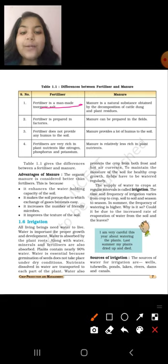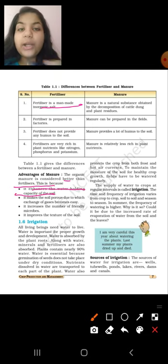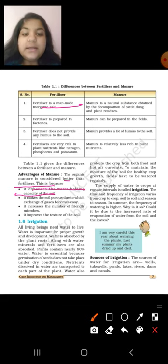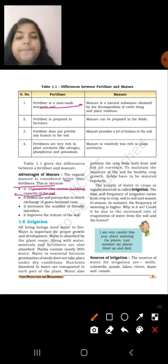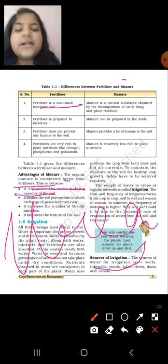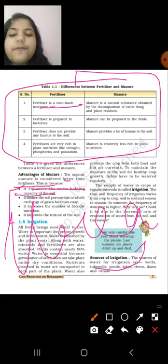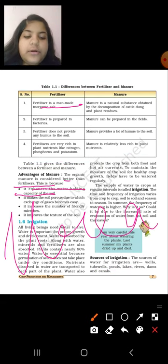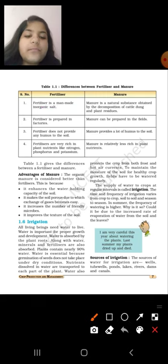Advantages of manure. Now we are going to read about the advantages of manure. The organic manure is considered better than fertilizer. This is because it enhances the water holding capacity of the soil. Manure leads to water holding capacity of the soil. It makes the soil porous due to which exchange of gases becomes easy. It increases the number of friendly microbes. It improves the texture of the soil. The thing which you have to learn is the names of urea which we discussed in the last page, these differences between manure and fertilizers, and these four advantages of manure. I hope you have understood.